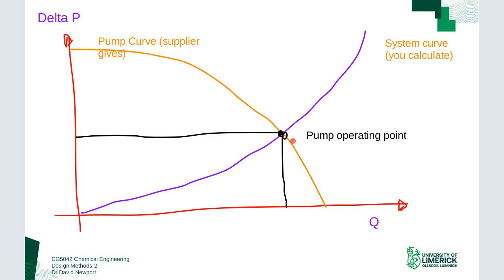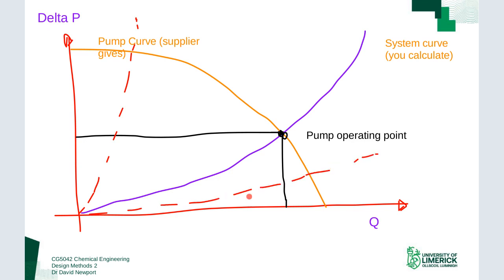When you're doing design changes, you're looking at how that impacts the system curve. We may have a system curve that has a high-pressure system, so it may go up steeply. Or we may have a low-pressure system, which would be a shallower curve.